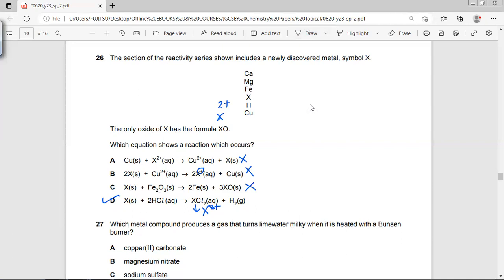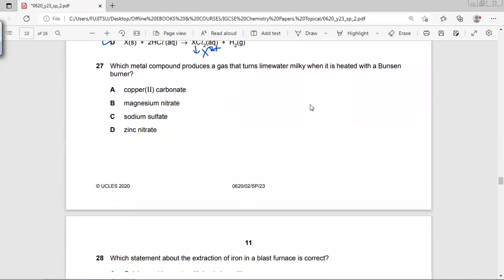Which metal compound produces a gas that turns limewater milky? It has to be carbon dioxide. So it has carbonate. Copper carbonate can be heated to produce carbon dioxide.